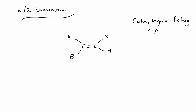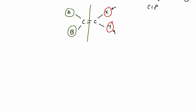The rules assign a priority to the atoms or groups bonded to each carbon — importantly, we take each carbon separately: priority of A versus B, then priority of X versus Y. E comes from the German for 'opposite', so it's equivalent to a trans isomer. Z comes from the German for 'together' and is equivalent to the cis isomer. An easy way to remember: Z is 'zis' — same side.